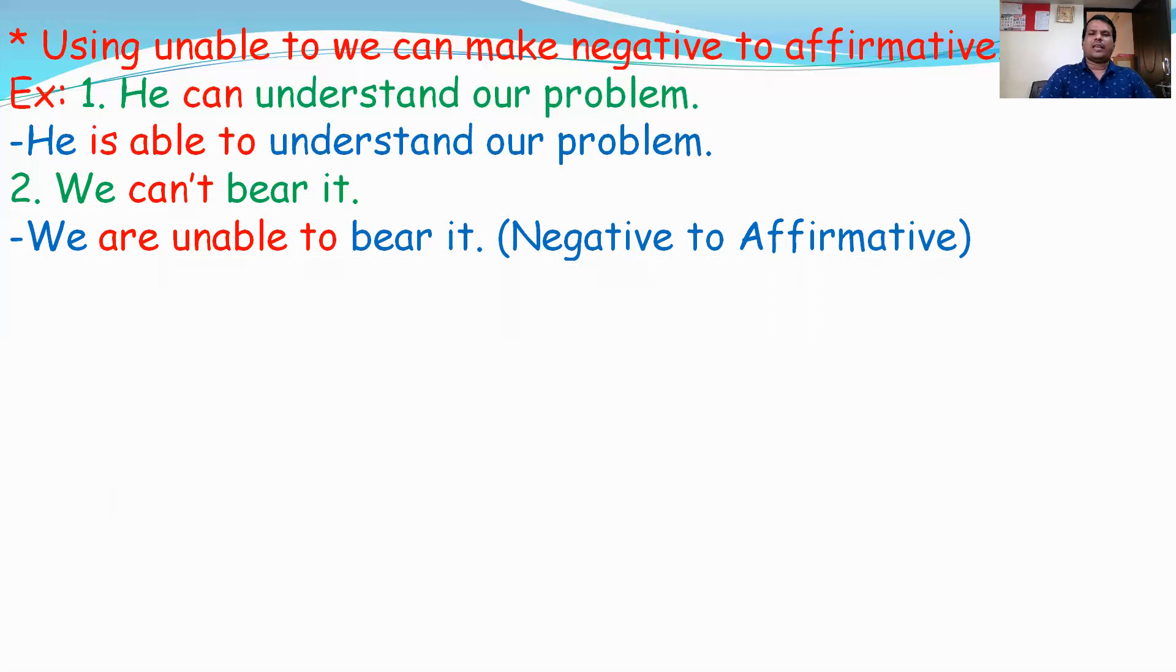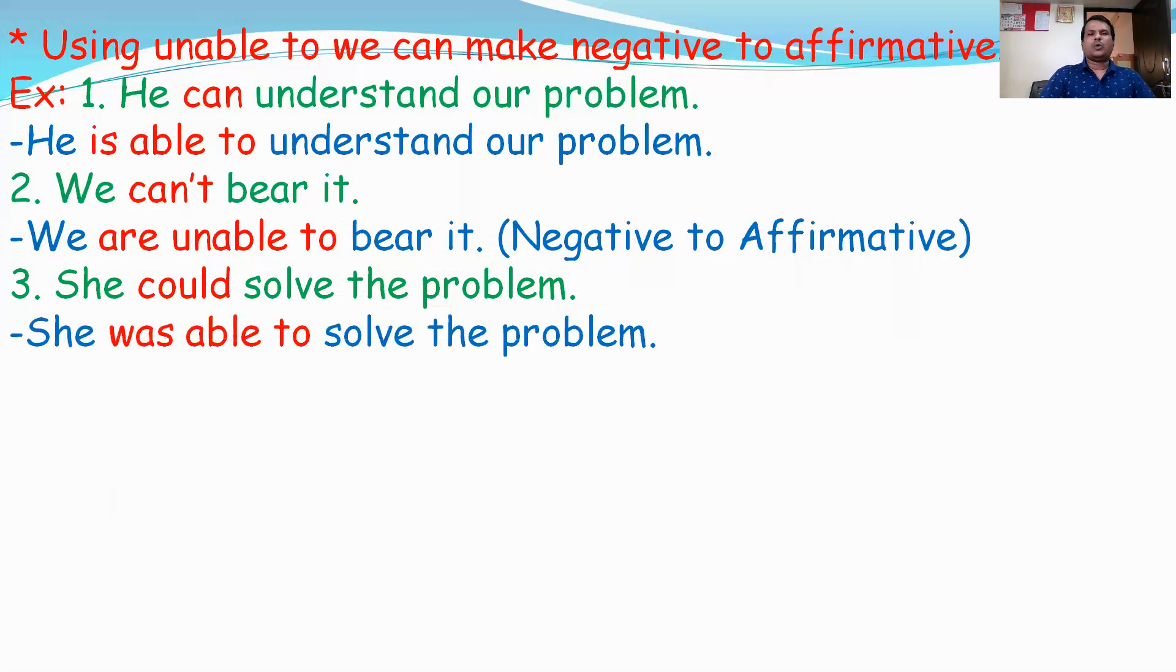Third sentence: She could solve the problem. 'Could' is past tense. For past tense with able to, we use was/were. For 'she,' we use 'was.' The answer is: She was able to solve the problem.